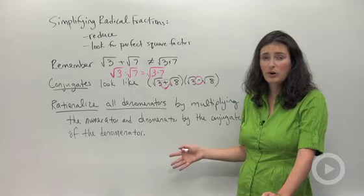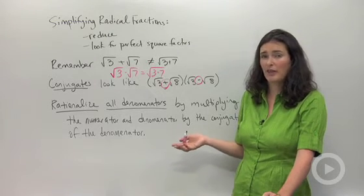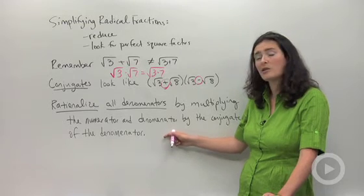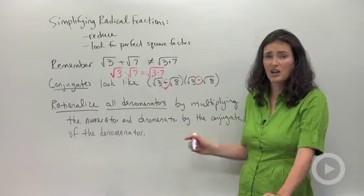But again, the most important thing to remember is that you never want to leave a radical expression, or that means a square root, in the bottom of a fraction. Always rationalize by multiplying by the conjugate of the denominator.